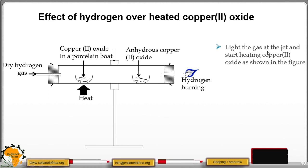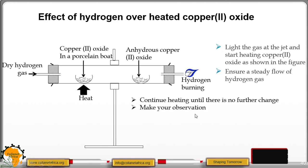Light the gas at the jet and start heating copper oxide as shown in the figure. Ensure a steady flow of hydrogen gas. Continue heating until there is no further change. Make your observations.